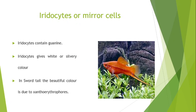The next second type of specialized cells are iridocytes which are responsible for coloring fishes. These cells are also known as mirror cells due to the great reflecting power possessed by them. The iridocytes contain guanine which is a white opaque silvery crystalline material and occurs in the form of crystals, granules, and platelets. The iridocytes give white or silvery color to the body.